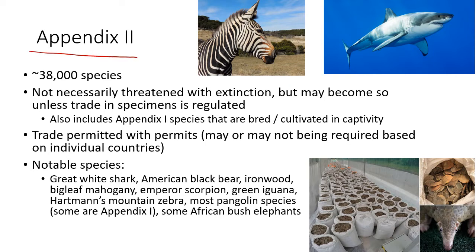Appendix Two has about 38,000 species — many more than Appendix One. These aren't necessarily threatened with extinction, though some are, but they may become so unless trade is regulated. Without regulation, they are on their way to becoming critically endangered or endangered. Trade is permitted with permits; however, different countries have their own rules. For example, if someone is capturing pangolins in a Southeast Asian country that doesn't require a permit, and sending them to China, which also doesn't require a permit, that escapes everything to do with CITES.